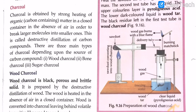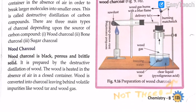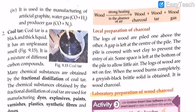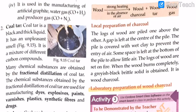Wood charcoal is black, porous, and a brittle solid. It is prepared by the destructive distillation of wood — wood is heated in a closed container in the absence of air and converted into charcoal, leaving behind volatile impurities such as wood tar and wood gas.